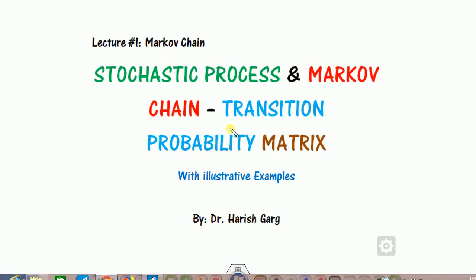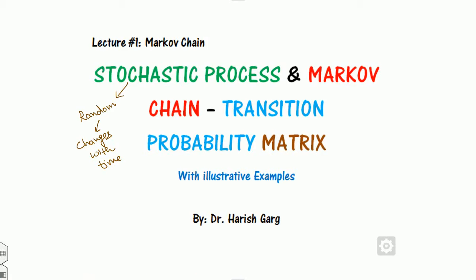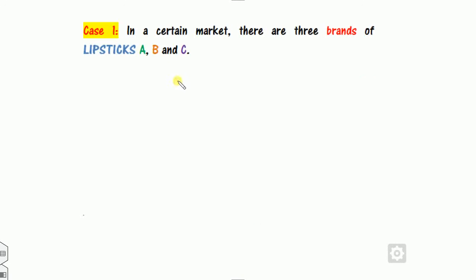First of all, where do we see Markov chain or stochastic process in our day-to-day life? The word stochastic means random — anything that is changing with respect to time. Anything which changes with respect to time is called stochastic, and the process followed is called the stochastic process. We have seen that stochastic processes are surrounding us everywhere.